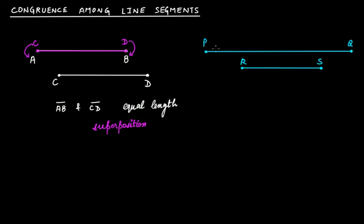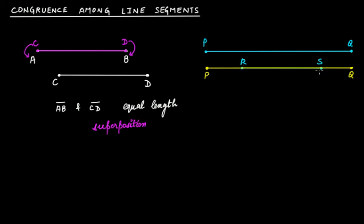In this figure, if you try to apply the method of superposition, what will happen is P will come here and Q will come here. P and R will be at different positions, and S and Q will be at different positions — R will not be covered with P and Q will not be covered with S, since these two line segments are not of equal length. PQ is exactly of greater length than RS. Therefore they are not of equal length.